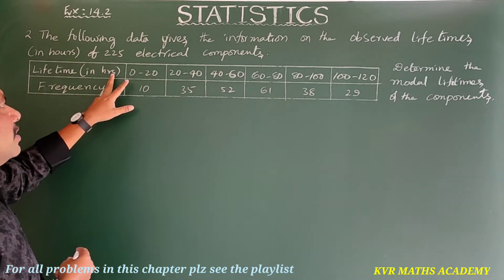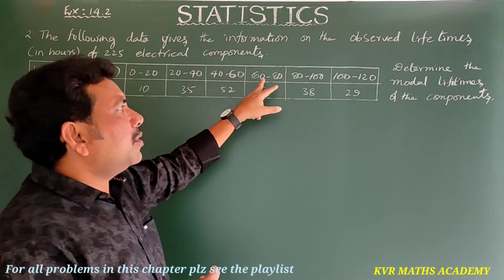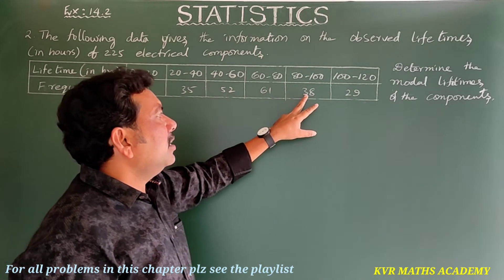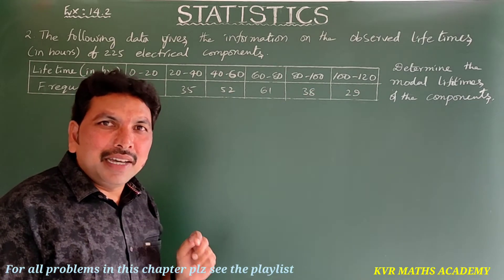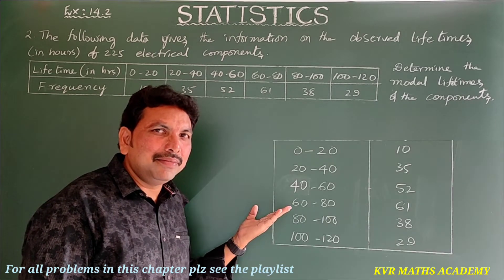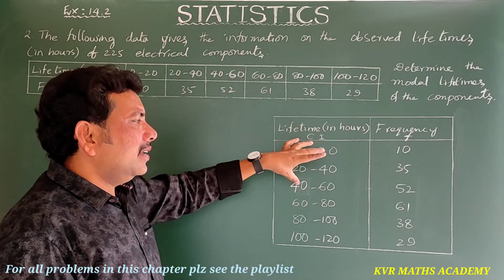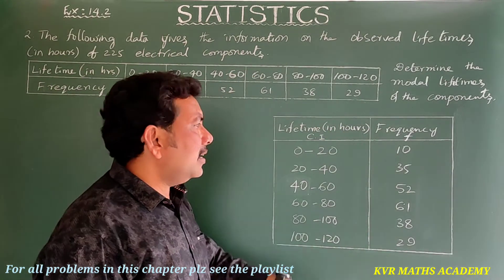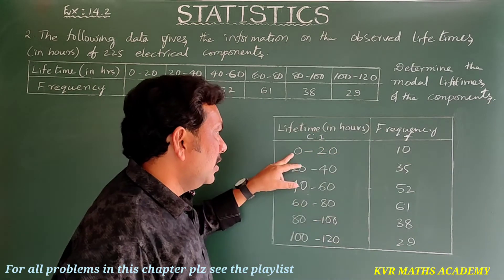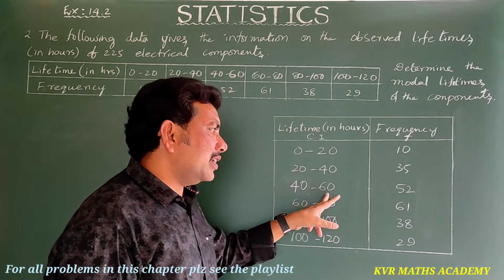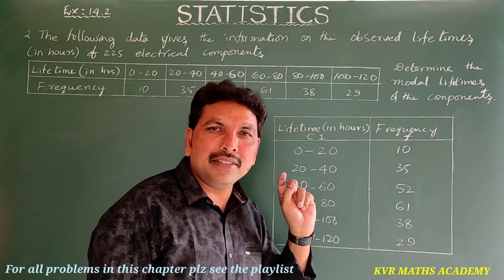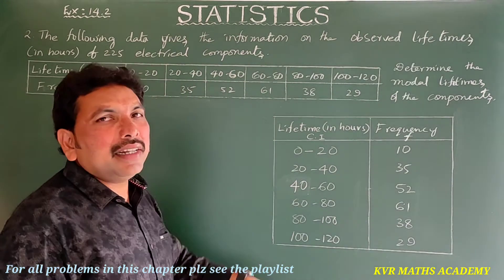In the table, lifetime in hours and frequency are given. The class intervals are 0–20, 20–40, 40–60, 60–80, 80–100, and 100–120. The corresponding frequencies are 10, 35, 52, 61, 38, and 29. I have drawn the table and will explain from it.